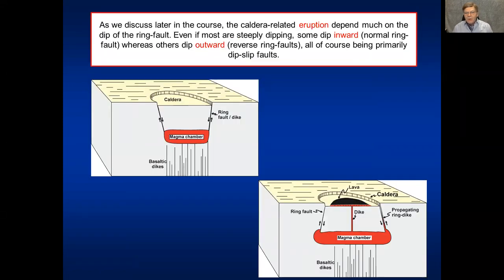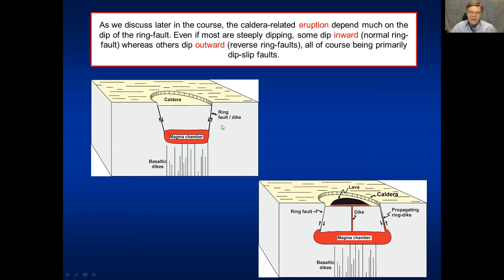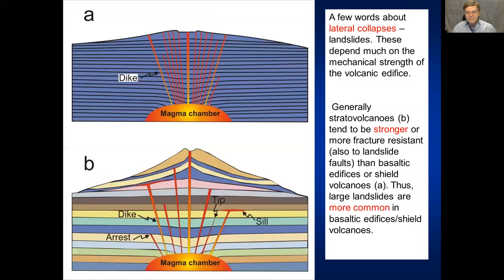We will discuss later how caldera formation affects the size of eruptions. Whether the ring fault is a normal or reverse fault has great effects on the potential size of eruption associated with the caldera collapse — which is not always the case, as we have had caldera collapses without any eruption.